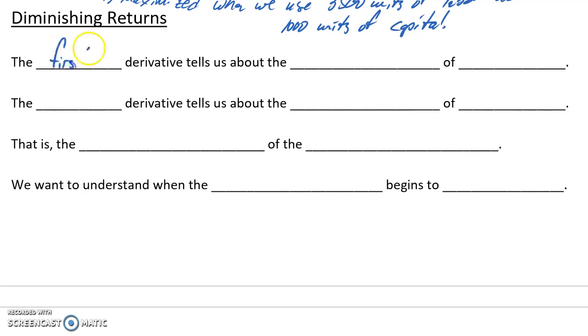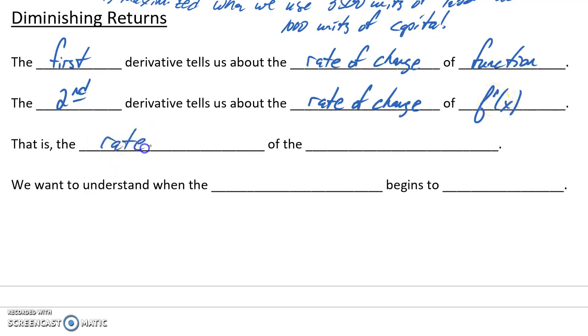So recall that when we talk about the first derivative, that tells us about the rate of change of our function. The second derivative tells us about the rate of change of the rate of change, or the rate of change of our derivative function, f prime. So that is the rate of change of the rate of change of our function.